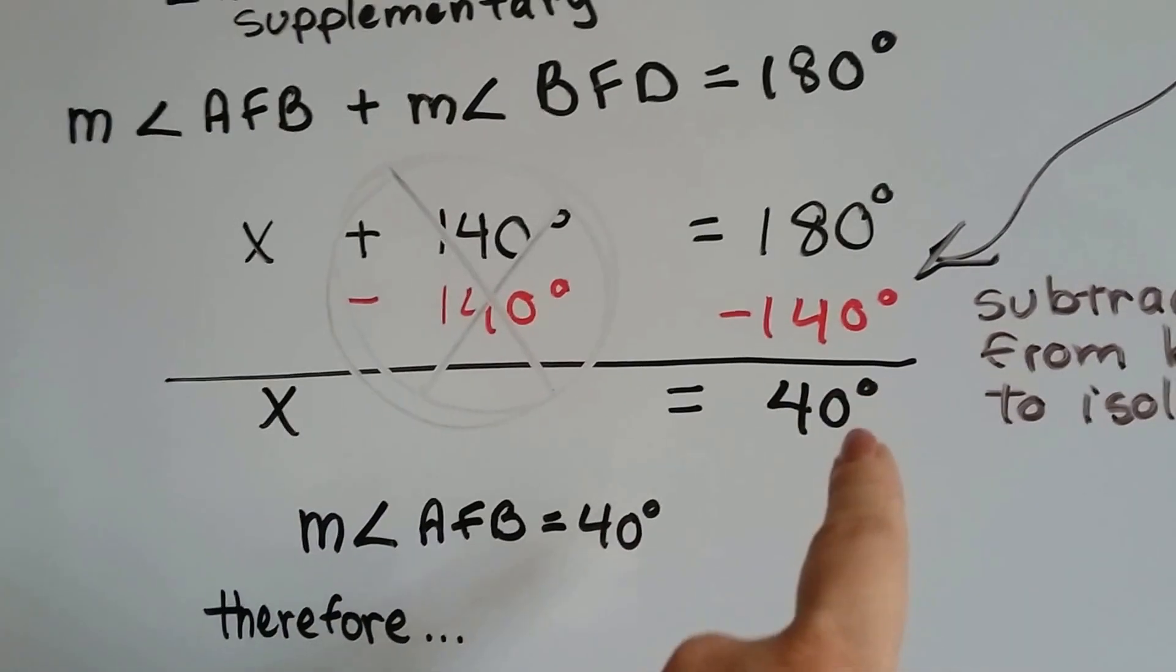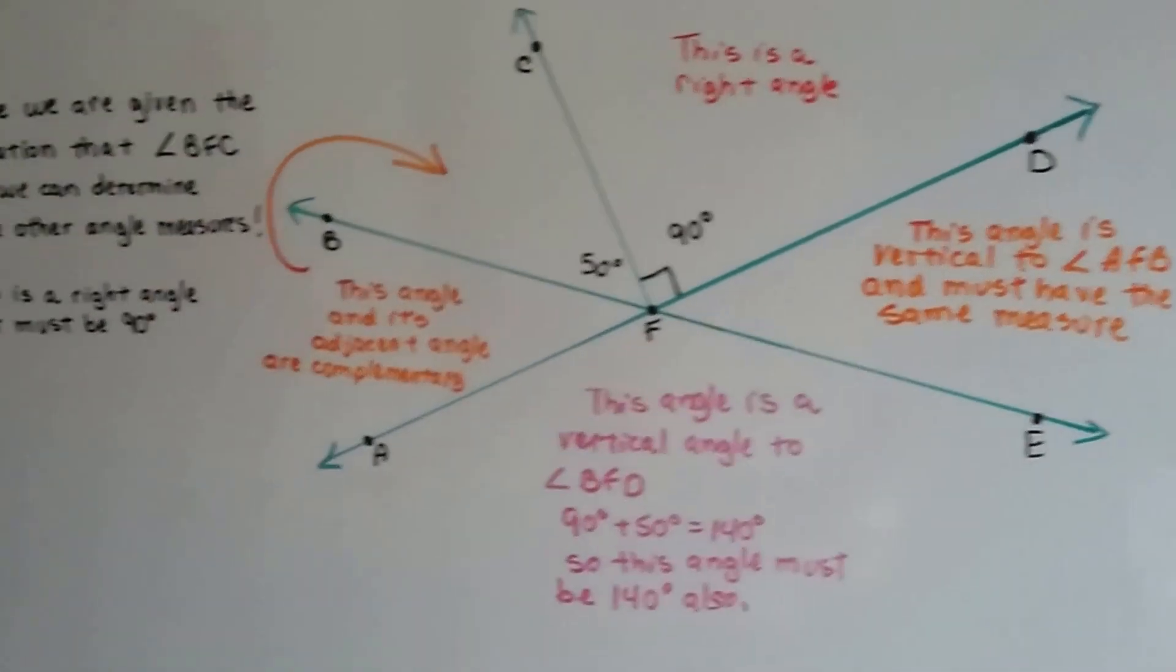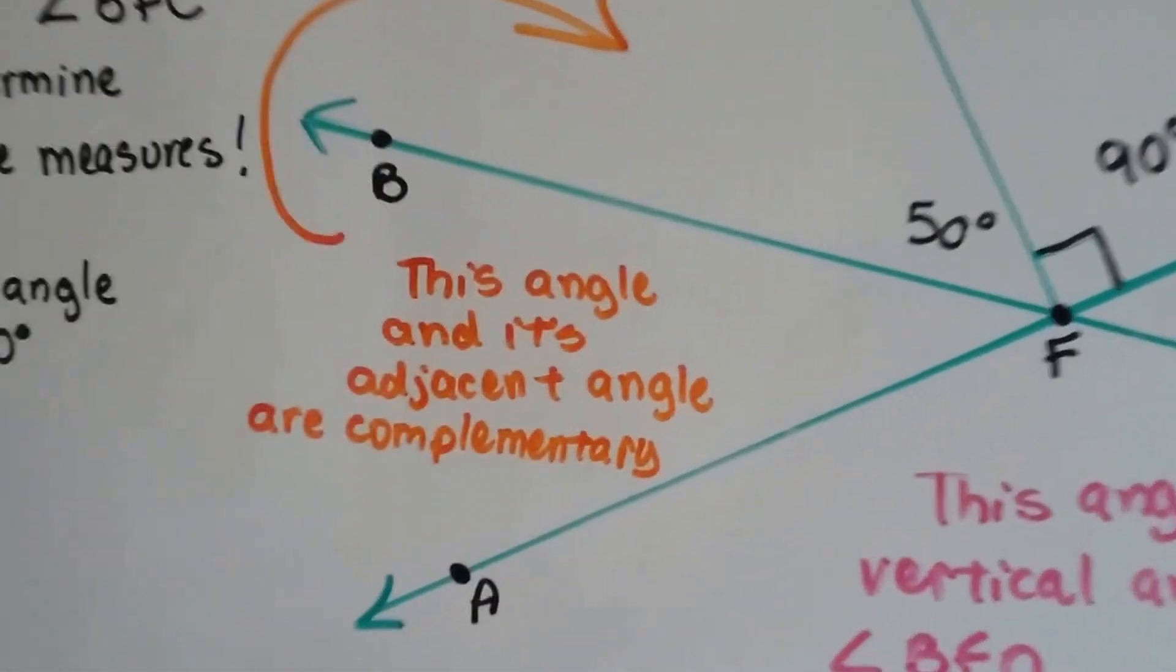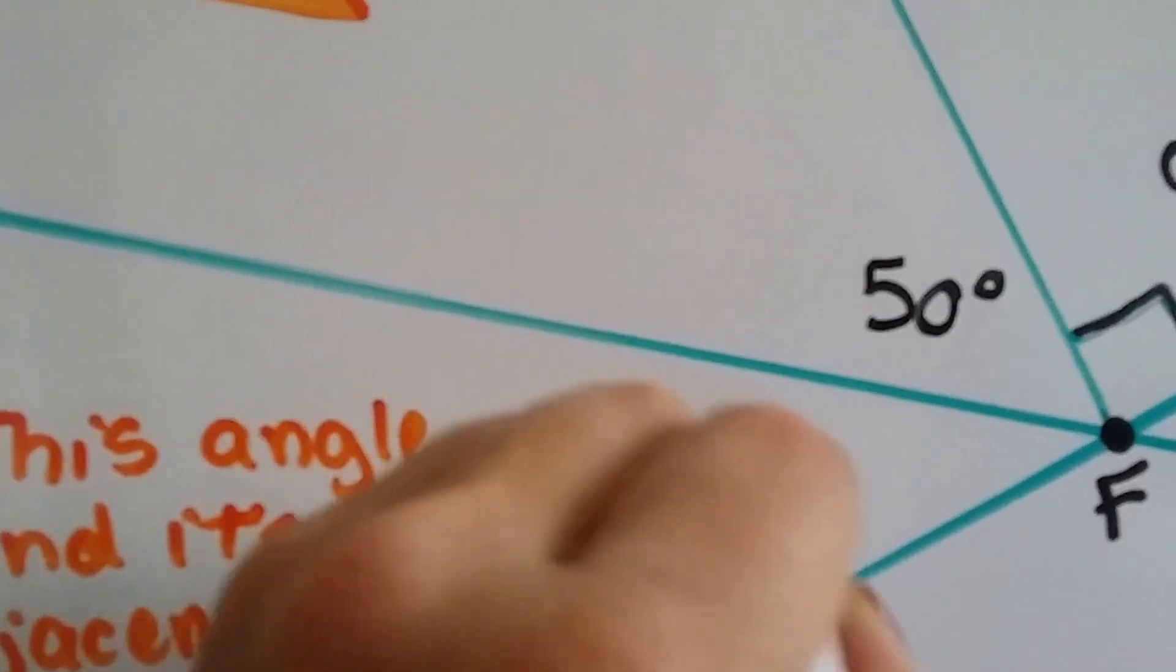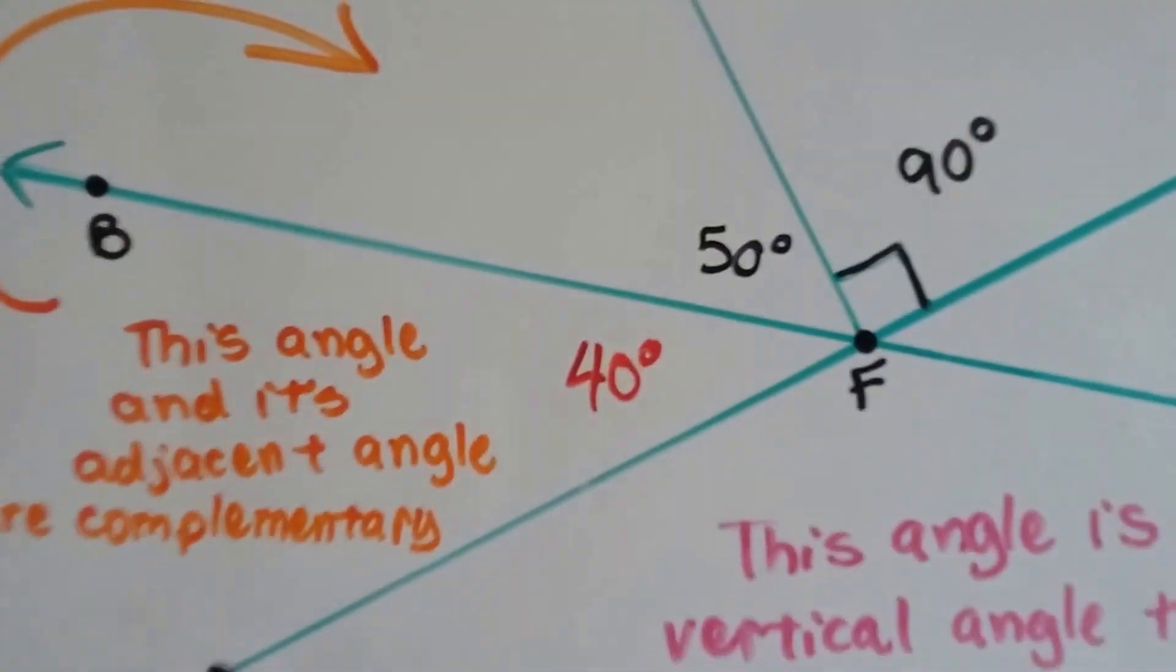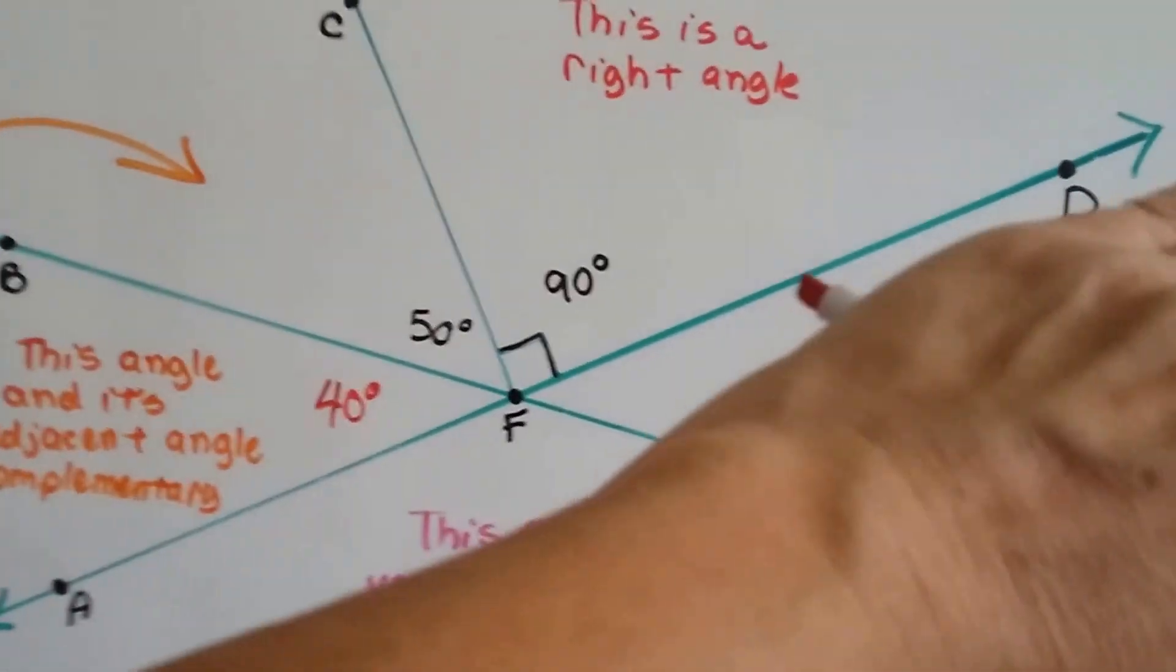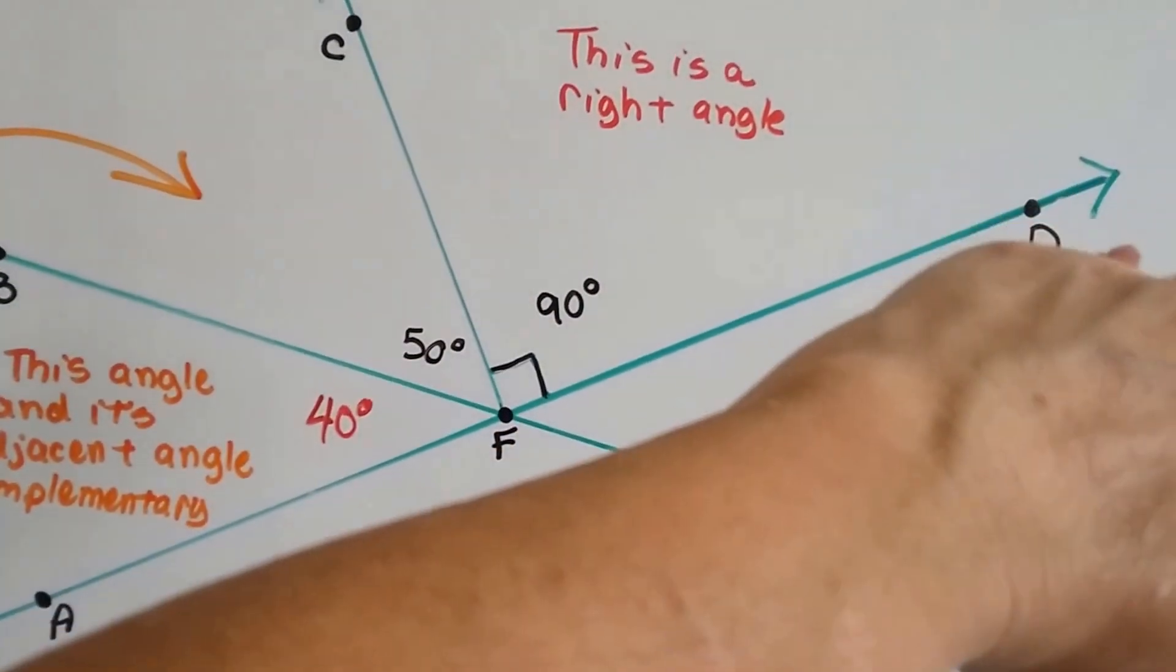And 180 take away 140 is 40. x is 140. x represents angle AFB. So guess what? That means angle AFB is 40 degrees. We know this one is now 40 degrees. And 40 and 50 is 90, and 90 and 90 is 180. So there's our supplementary angle right there.